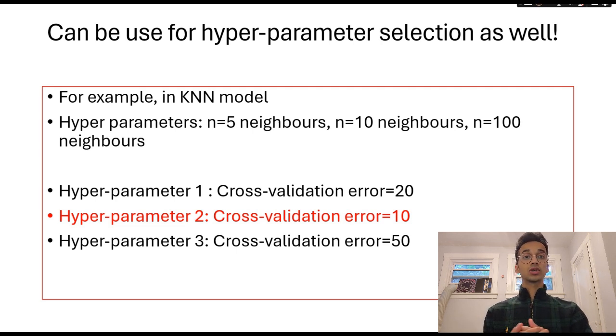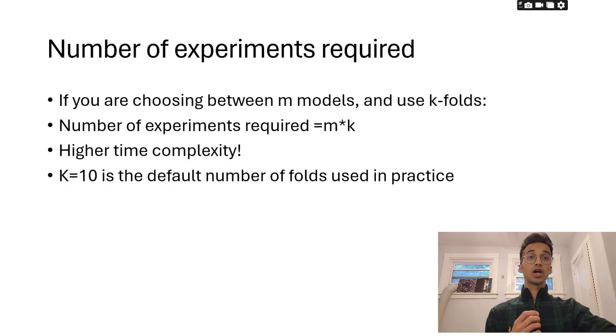Now it's important to note here that the number of experiments required for each model is gonna increase now as compared to our previous approach of simply creating one training set and one test set and training the model on that because if you have m models and you're deciding to use k folds of your data set the number of experiments is gonna be m into k so this does require higher time complexity and as you increase the number of folds it's gonna require even more time but it is worthwhile because it does give good results by truly selecting the best generalized model on your data set so k is equal to 10 is a default number of folds using practice but it depends on your data set the number of data points you have as well.